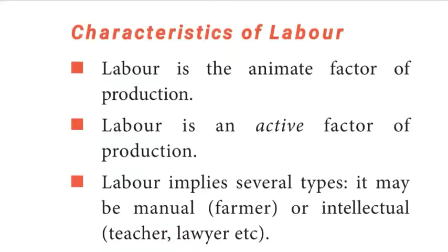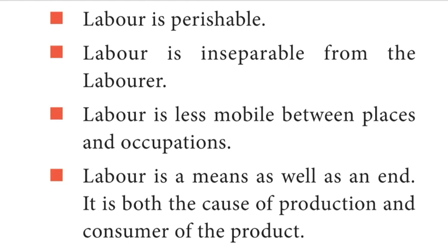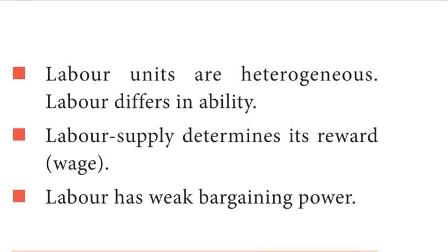According to Alfred Marshall, labor represents services provided by the laborer which help in yielding an income to the owner of the labor power. Characteristics of labor: Labor is the animate or living factor of production. Labor is an active factor of production. Labor implies several types — it may be manual or intellectual. Labor is perishable. Labor is inseparable from the laborer. Labor is less mobile between places and occupations. Labor is a means as well as an end. Labor units are heterogeneous; labor differs in ability. Labor supply determines its reward or wage. Labor has weak bargaining power.